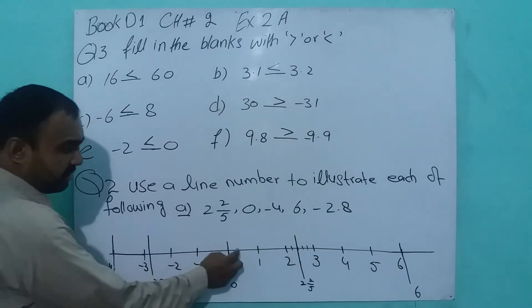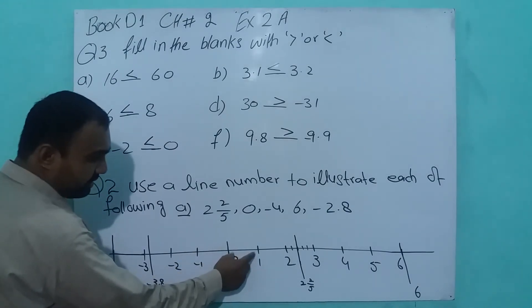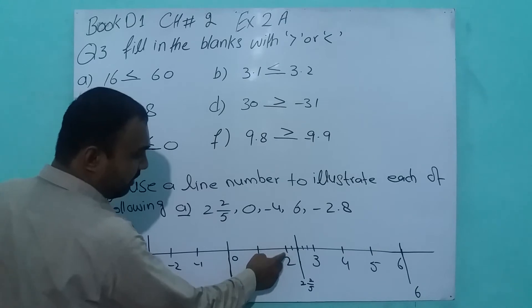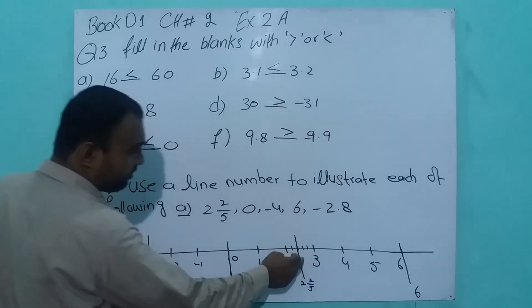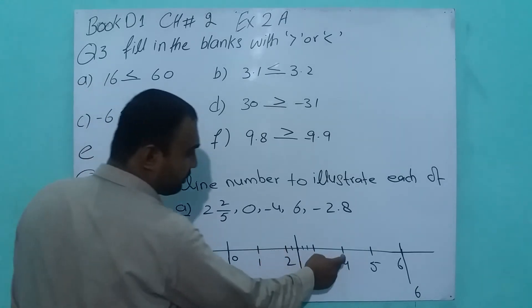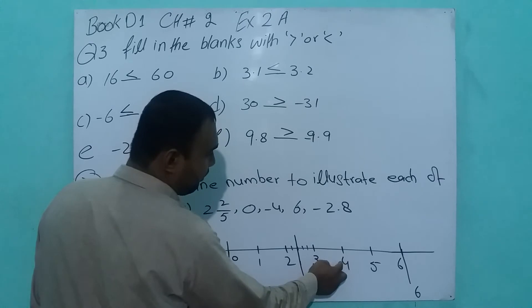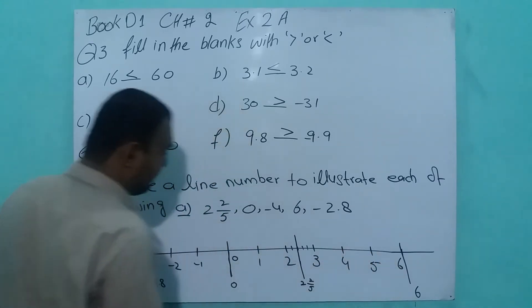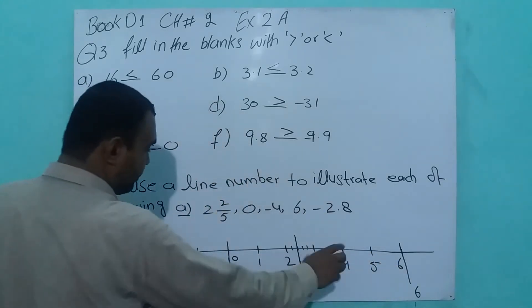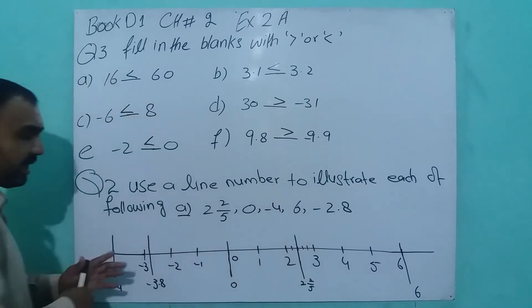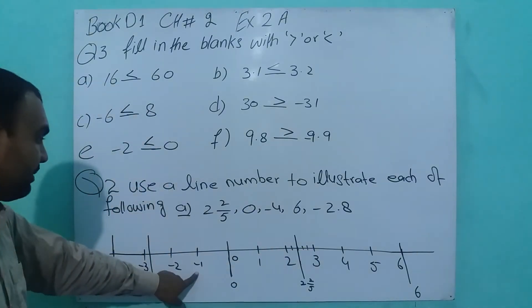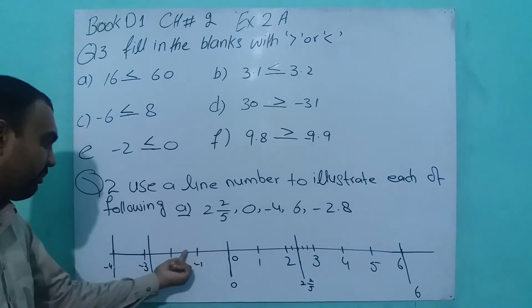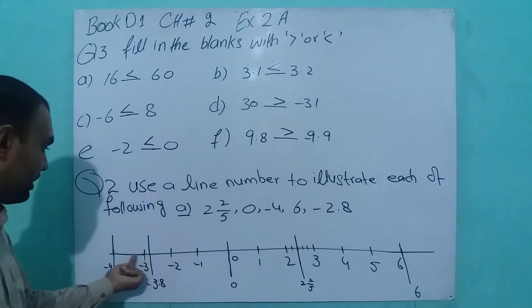Take center 0. From 0 to 1, same interval; 1 to 2, same interval; 2 to 3, same interval; 3 to 4, same interval; 4 to 5, same interval; 5 to 6, same interval. The right-hand side is positive and the left-hand side is negative. Minus 1, minus 2, minus 3, minus 4, all at the same interval.